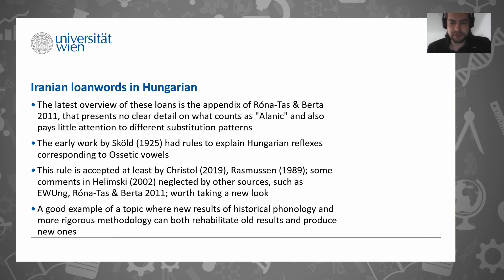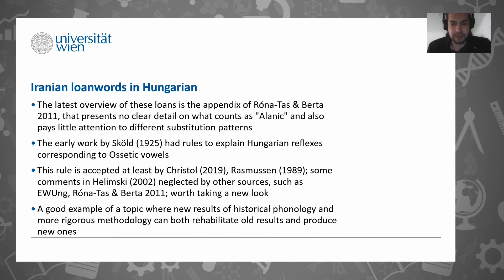Why is it important to do research on this topic? Well, there is a long research history, and there is already this monograph by Hannes Schult from 1925, which is a very good one and actually has very good substitution rules that explain the phonology of these loans quite well. But it's a problem that not all subsequent research has taken these rules into account. There are various kinds of ideas and views about the phonology of the Alanik loans in Hungarian, and that's why it's good to have a fresh look, rehabilitate some of the old ideas, and also present some new results.